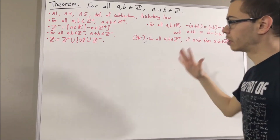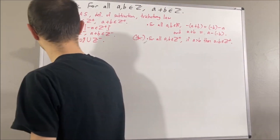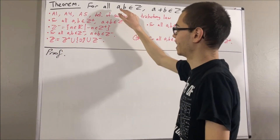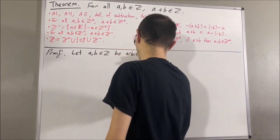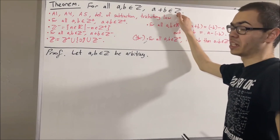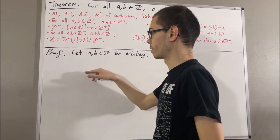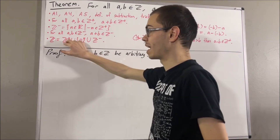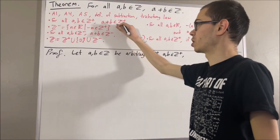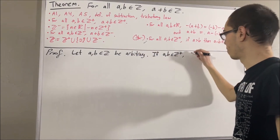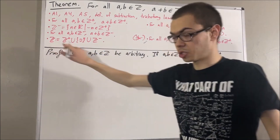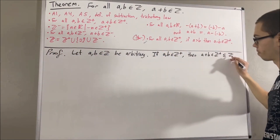Now let's get into proving this theorem. Let's give ourselves two arbitrary integers a and b. The goal is to show that a plus b is an integer, and we're going to split this into several cases. One possibility is that both a and b are positive integers. If that's the case, since the positive integers is closed under addition, this tells us a plus b is a positive integer. And since the positive integers is a subset of the integers, a plus b is an integer.